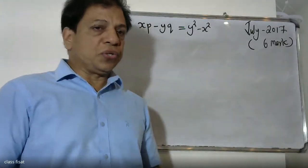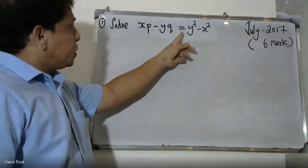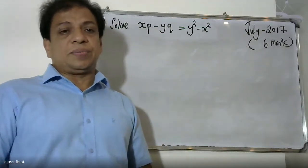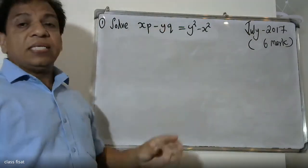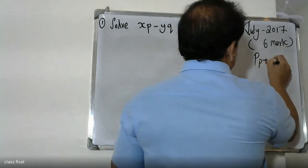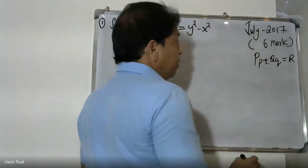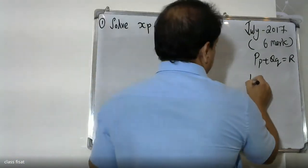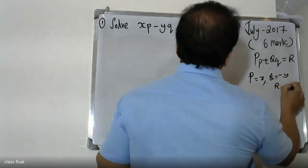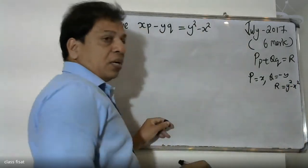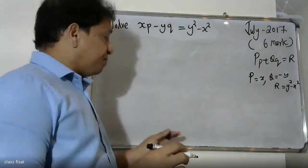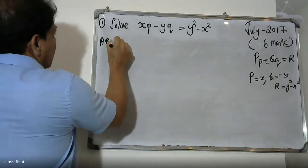Good morning students. The question is: solve xp minus yq equals y squared minus x squared. This is a Lagrangian equation. We write it in the form P·p plus Q·q equals R. We identify the coefficients: capital P is x, capital Q is minus y, and capital R is y squared minus x squared.